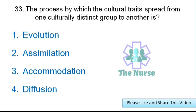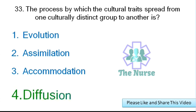Next question: The process by which cultural traits spread from one culturally distinct group to another is called what? Options: evolution, assimilation, accommodation, or diffusion. Correct answer: diffusion.